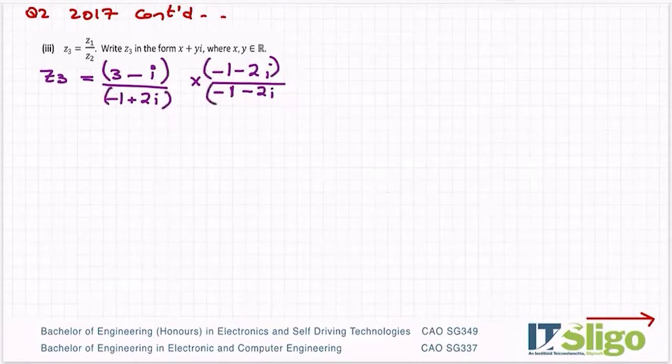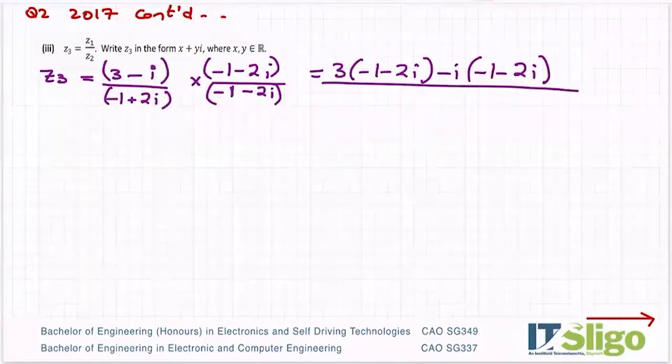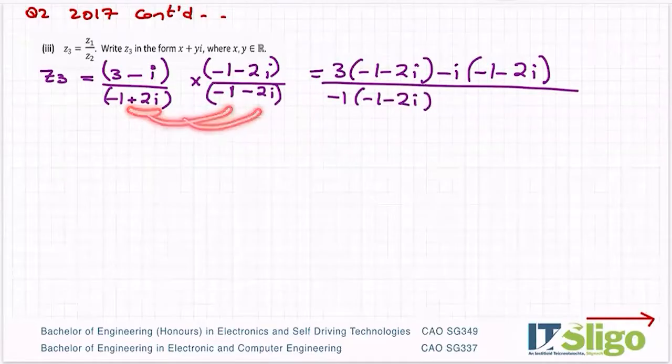To divide complex numbers you multiply above and below by the conjugate of the bottom. And then you go mad multiply. So it's the same as three by everything in the second bracket, minus i by everything in the second bracket, and then on the bottom again split it, so minus one by everything in the second bracket and go back for the plus two i by everything in the second bracket.